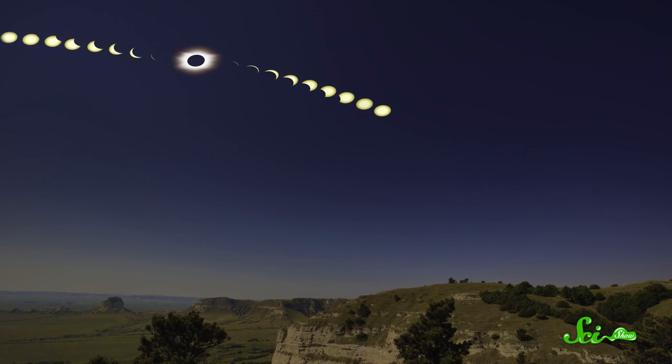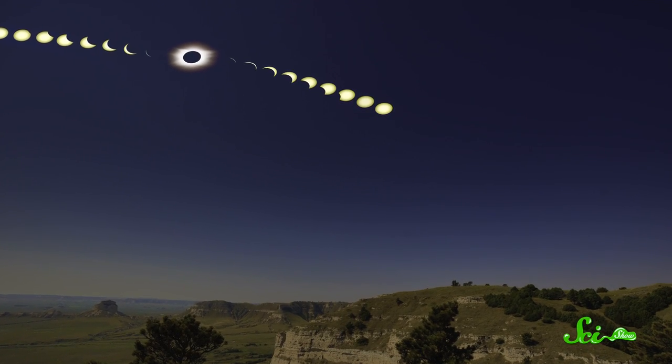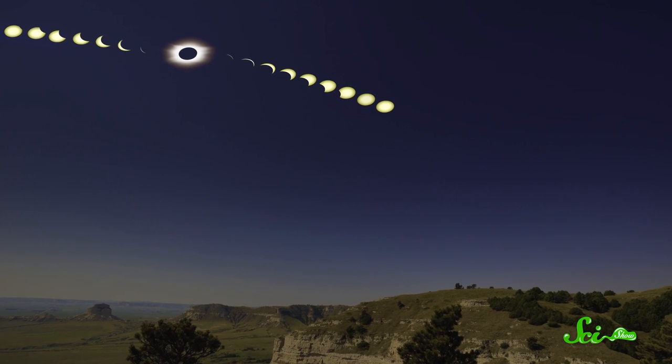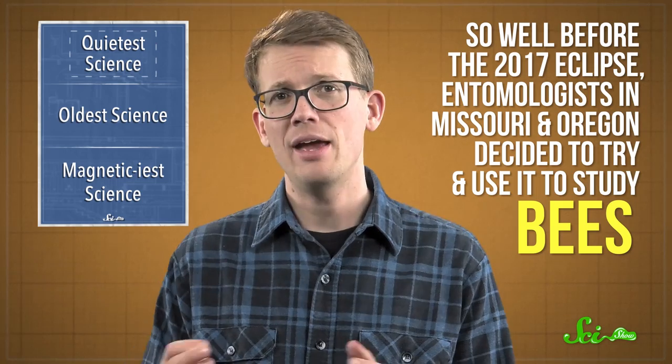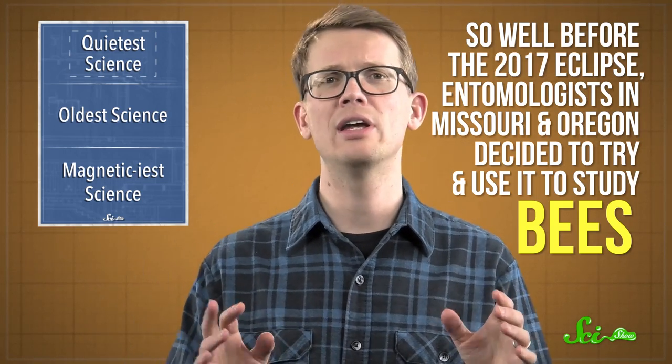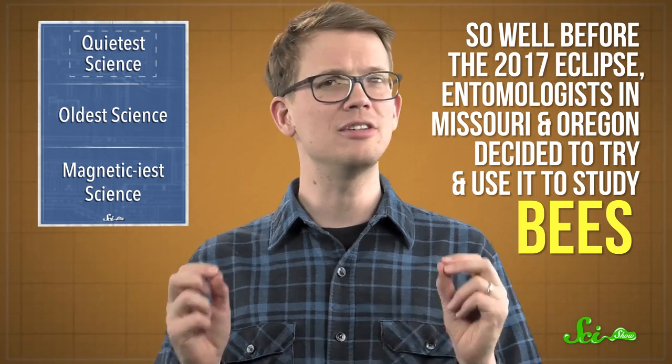Total solar eclipses interrupt the daily lives of all sorts of animals, from birds who suddenly think it's bedtime, to humans who gawk at the sky. And different animals' reactions to the sudden temperature drop and sudden darkness can teach scientists about the kinds of environmental cues they use to keep track of time. So well before the 2017 eclipse, entomologists in Missouri and Oregon decided to try and use it to study bees.